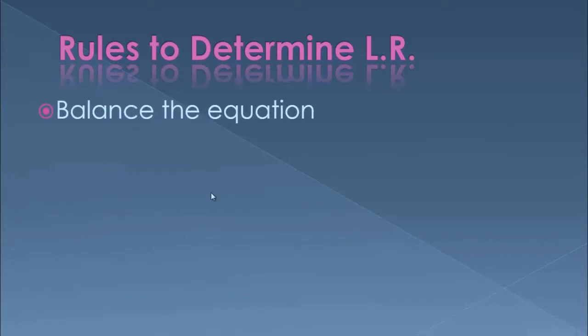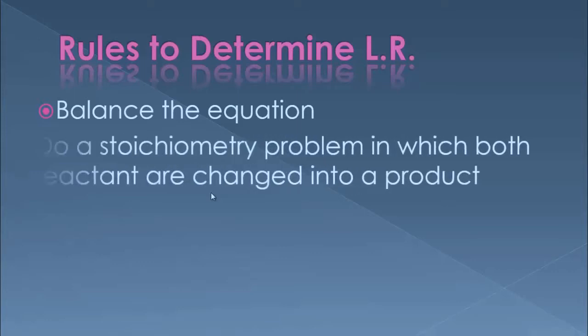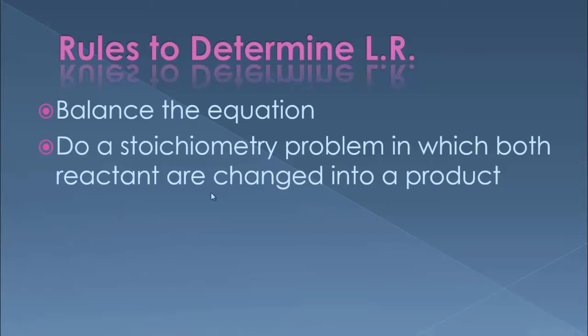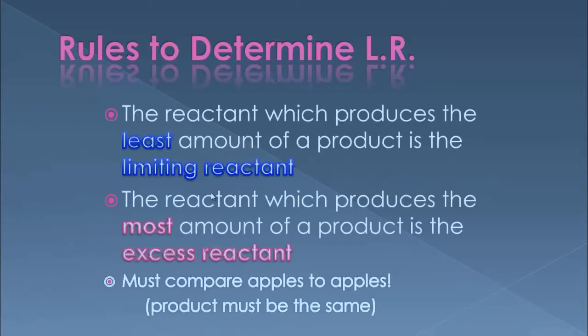Rules to determine your limiting reactant: even though it's a different type of problem, it's still a stoichiometry problem. So the first thing we need to do is balance the equation. Then you do your stoichiometry — take both of those given numbers and convert them both into one of the products. The reactant which produced the least amount of product is your limiting reactant, and the reactant which produced the most is your excess reactant.